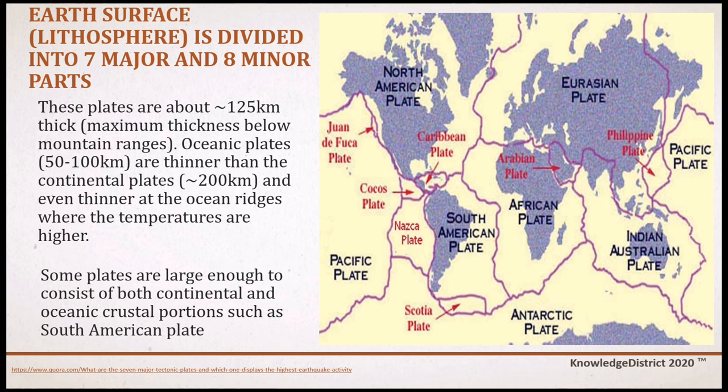The oceanic plates are thinner than the continental plates, and even thinner at the ocean ridges where temperatures are higher. Some plates are large enough to consist of both continental and oceanic crustal portions, such as the South American plate.